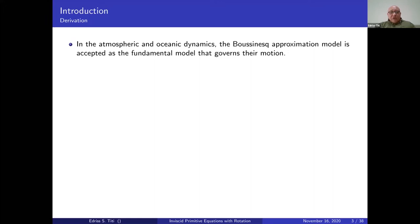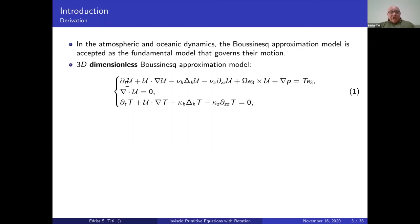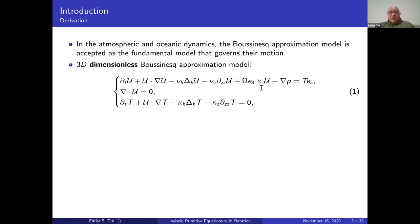In atmosphere and oceanic dynamics, the Boussinesq approximation is accepted as a fundamental model governing the equations of motion. In the three-dimensional equation, if U is the velocity, this is the conservation of momentum equation. The horizontal Laplacian represents diffusivity horizontally, and derivative in Z gives diffusivity vertically. This is the Coriolis force; omega is the rate of rotation. Pressure is unknown, T is temperature. We have incompressible fluid, with temperature being advected and diffused. This is called the Boussinesq equation.